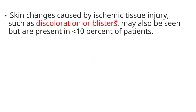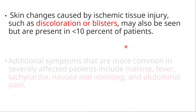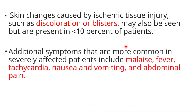Skin changes caused by ischemic tissue injuries, such as discoloration of the skin or blisters, may also be seen, but are present in less than 10% of patients. Additional symptoms more common in severely affected patients include malaise, fever, tachycardia, nausea and vomiting, and abdominal pain.